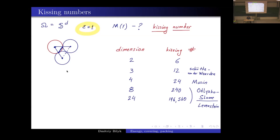In two ambient dimensions (S¹), the answer is obviously six. For three dimensions, there is a famous legend about an argument that Newton had with Gregory, where Newton said the answer is 12 and Gregory said it's 13. Neither had a proof. History showed Newton was right — the answer is 12, proved in the middle of the 20th century by Schütte and Van der Waerden. The answers are also known in four, eight, and 24 dimensions — in four dimensions due to Musin, and in eight and 24 independently due to Levenshtein, Sloane, and Delsarte. I just want to stress that the kissing number is an example of a best packing problem.